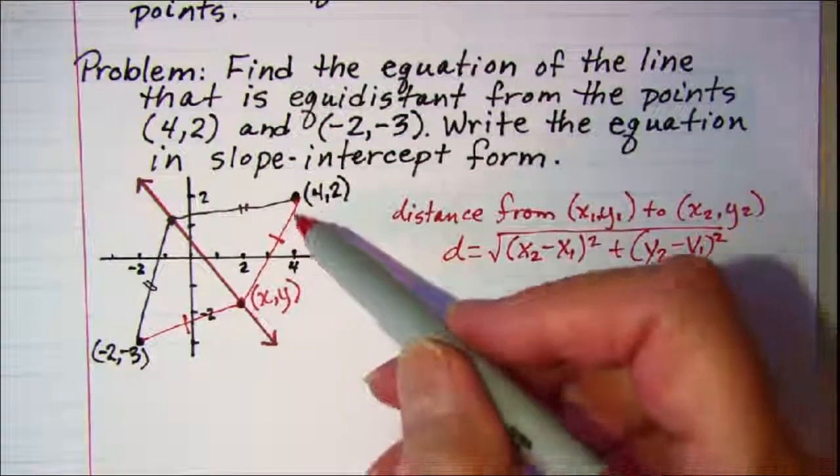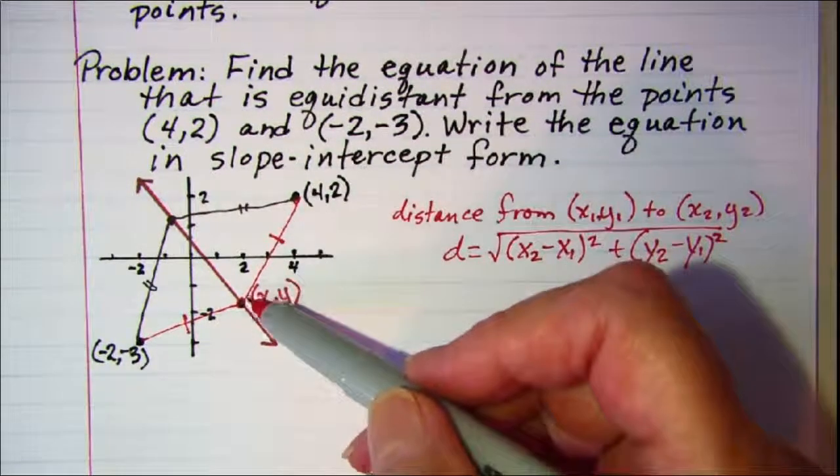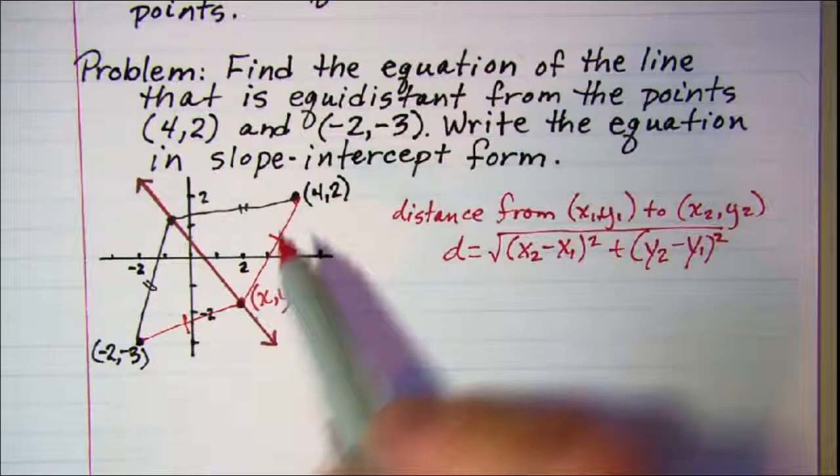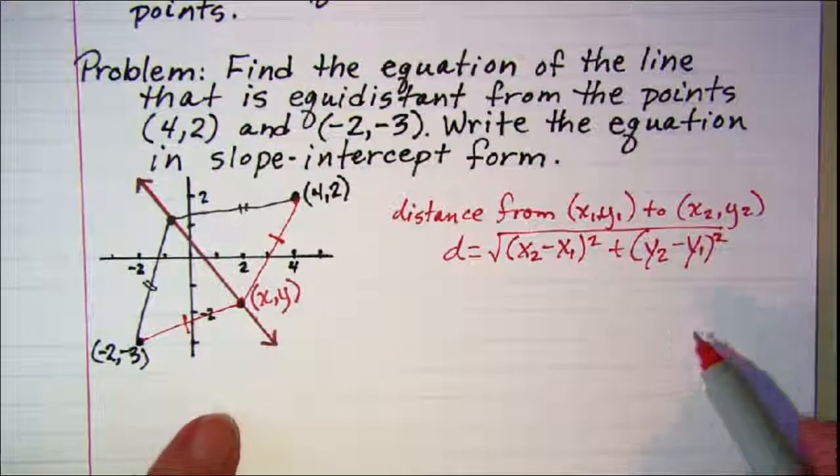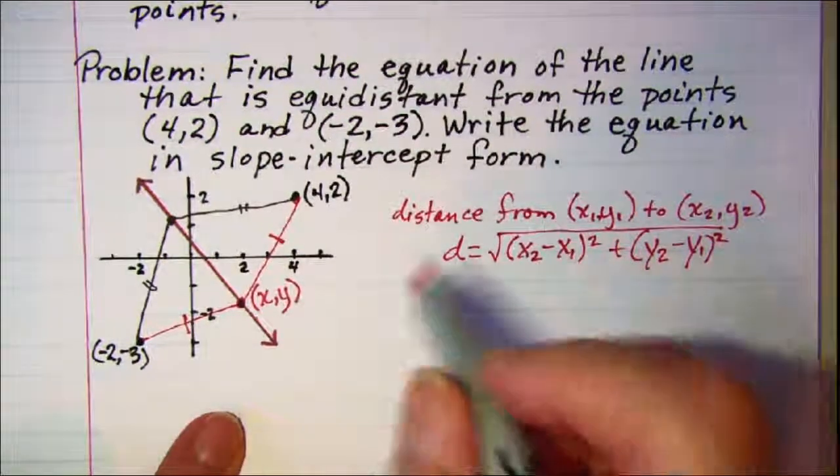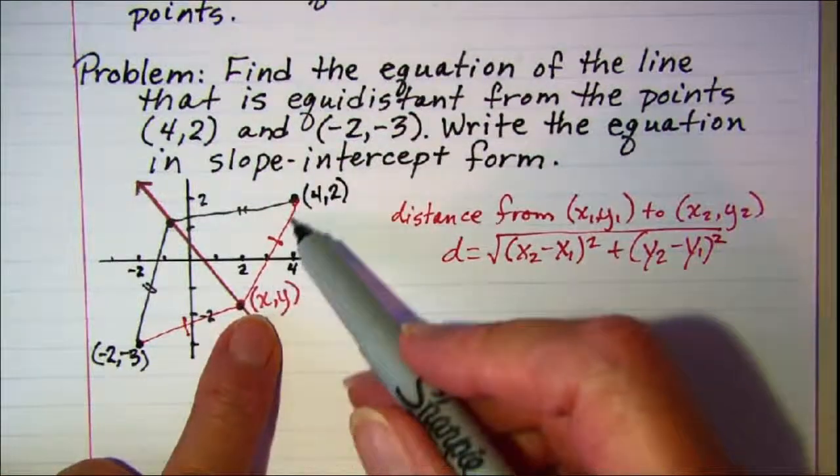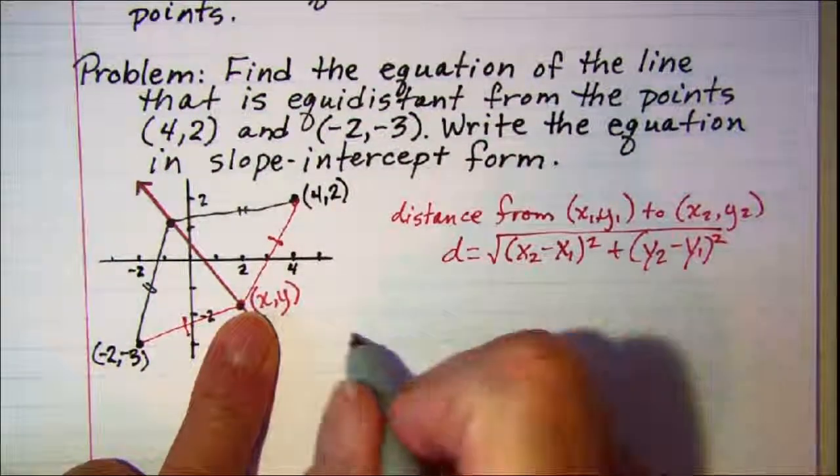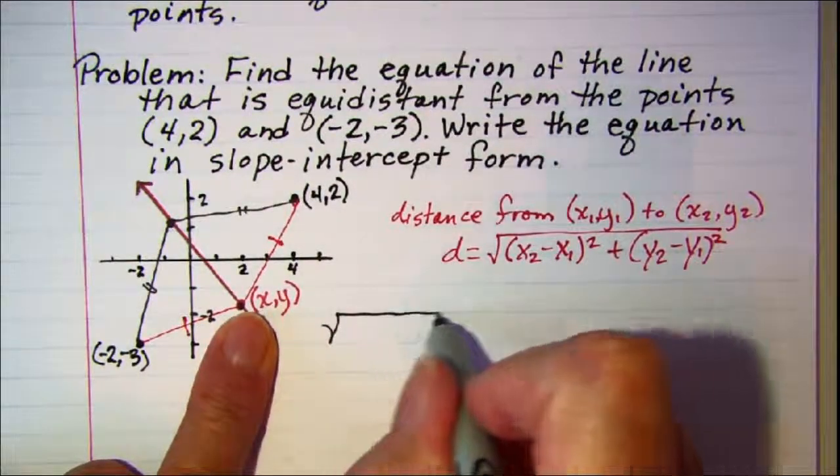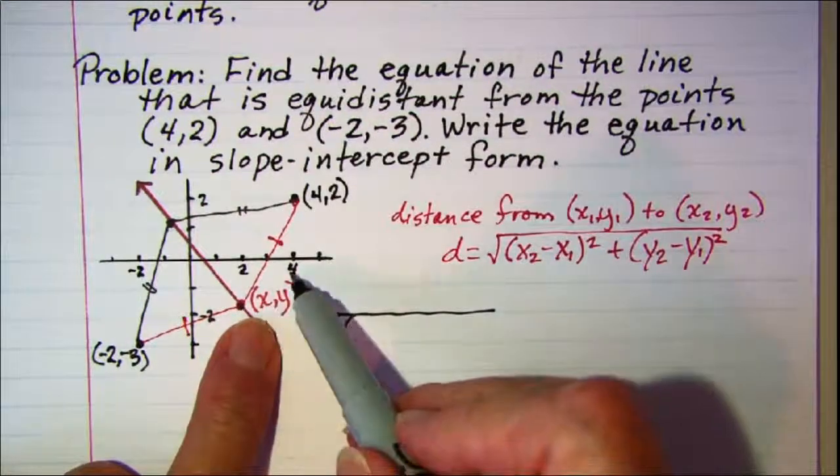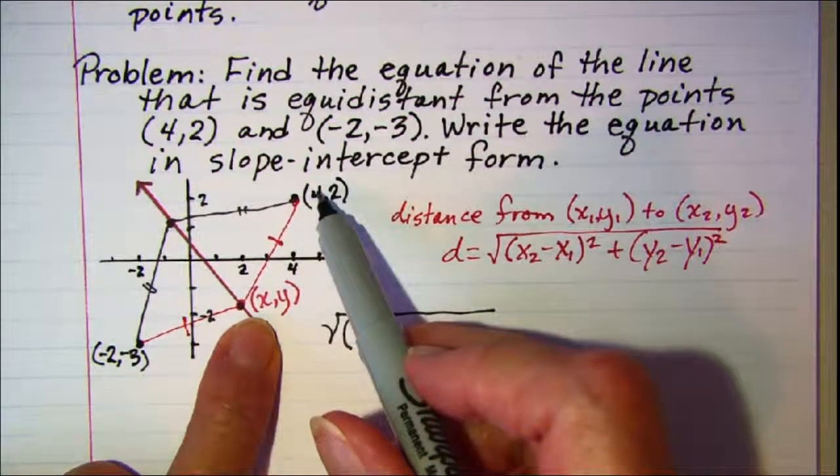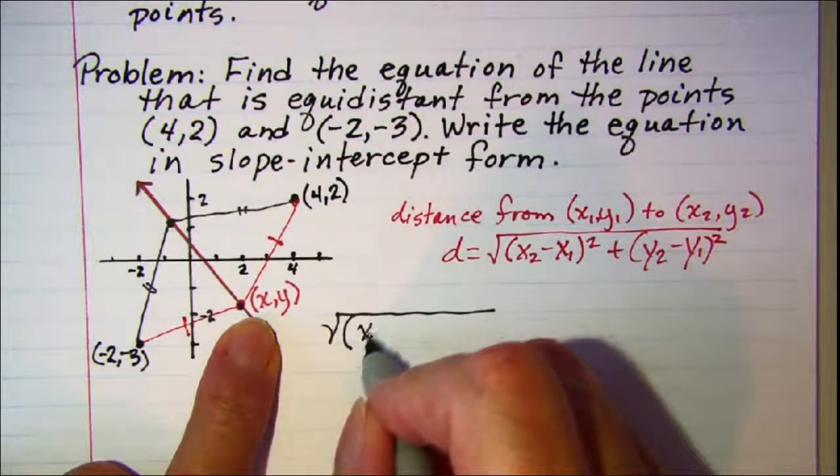So what we'll want to do then is just state that the distance here is equal to the distance here. Our two distances then, let's do this distance first. We want the square root of this x coordinate subtract this x coordinate, so (x - 4).